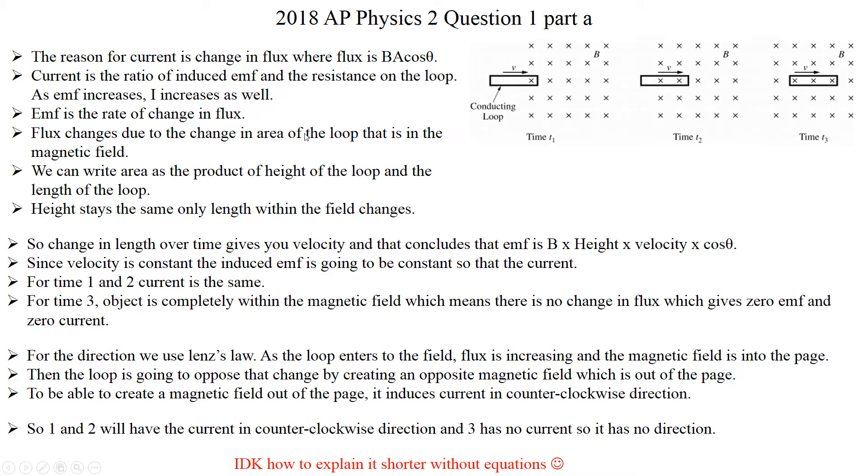So flux changes due to the change in area of the loop that is in the magnetic field. And then we can write area as the product of the height of the loop and the length of the loop. So since we are talking about area, area of the loop is this height, this length, and the width. So in this case, if you look at it, this height is staying constant.